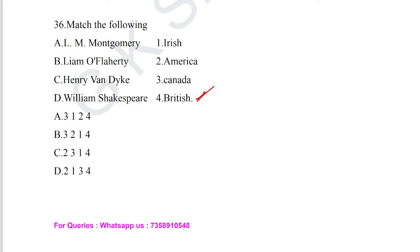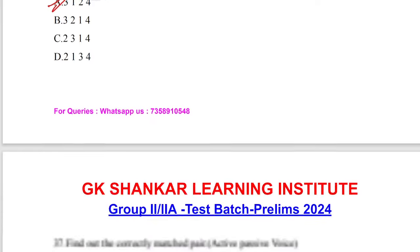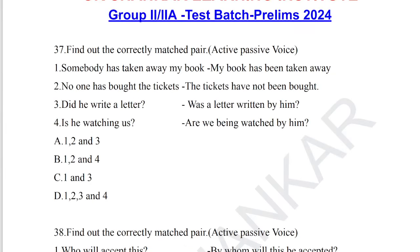Question number 36: match the following — authors and their nationalities. L.M. Montgomery is a Canadian author/poet; Liam O'Flaherty is Irish; Henry Van Dyke belongs to America; William Shakespeare is a British author. Option A is the correctly matched answer for question number 36.